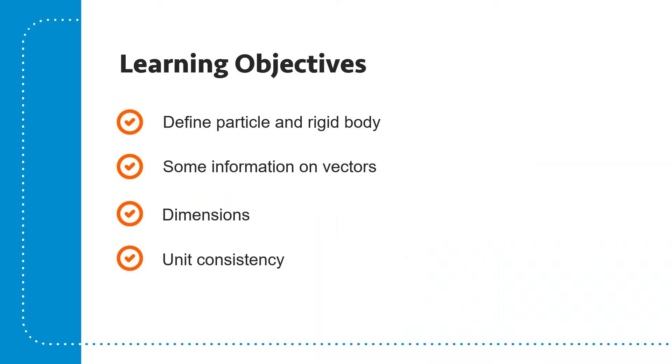And so what I'm going to do is I'm going to define specifically what a particle and a rigid body are, look at information on vectors, define the basic definitions and dimensions that we use in the course and sort of highlight the importance of unit consistency. These will be highlighted and emphasized on a regular basis as you go through the course. But today I'm just going through these to tell you what they are.